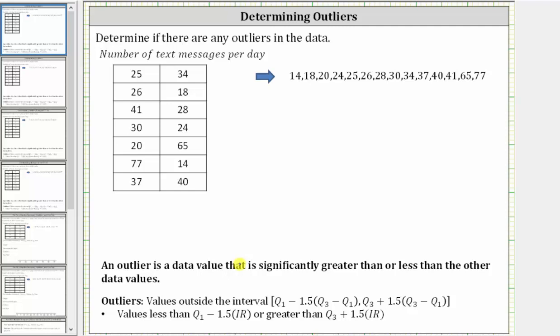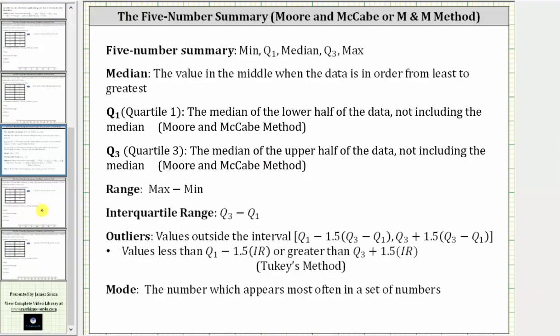Before we determine any outliers, it's important to be aware of the methods used to determine quartile one, quartile three, and the outliers. In this video, we will use the Moore-McCabe method to determine the quartiles, where quartile one is the median of the lower half of the data, not including the median, and quartile three is the median of the upper half of the data, again not including the median.